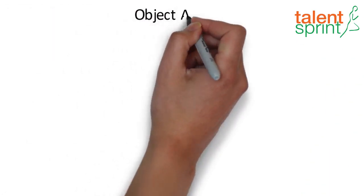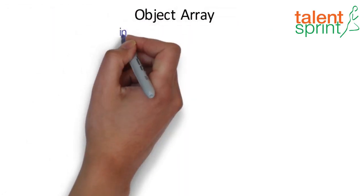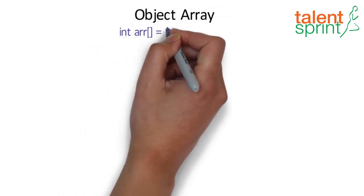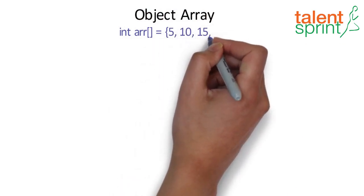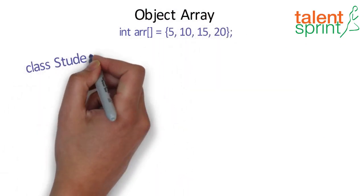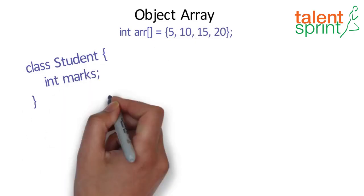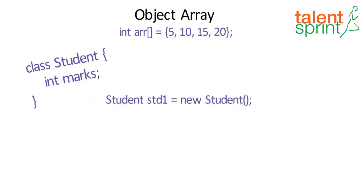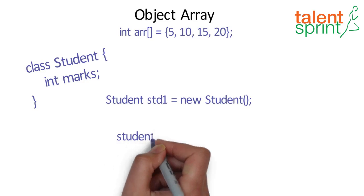An array of objects is created just like an array of primitive type data items in the following way. The student objects have to be instantiated using the constructor of the student class, and their references should be assigned to the array elements in the following way.